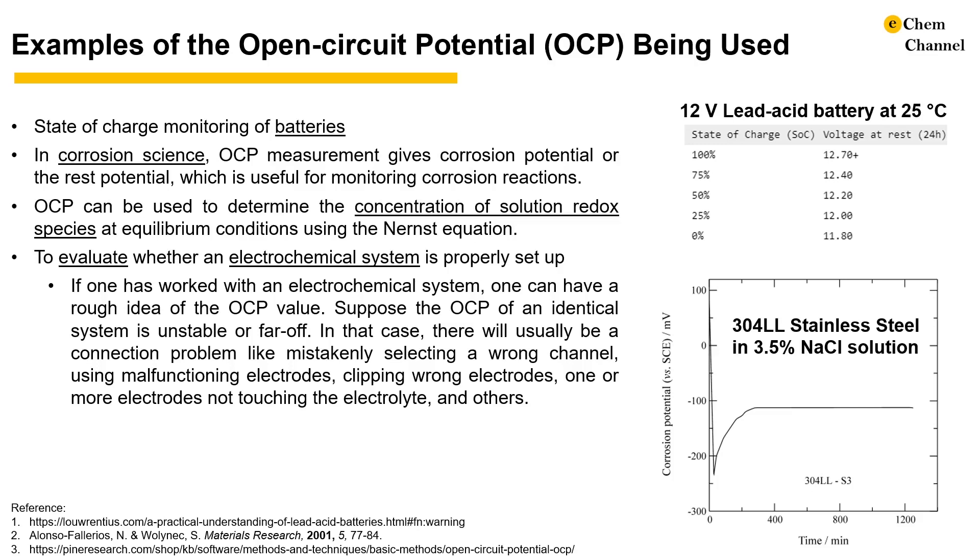Suppose the OCP value of an identical system is unstable or far off. In that case, there will usually be a connection problem like mistakenly selecting a wrong channel, using malfunctioning electrodes, clipping wrong electrodes, having one or more electrodes not touching the electrolytes, and others.